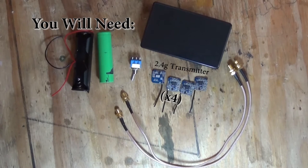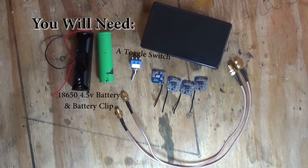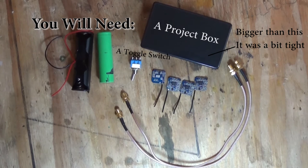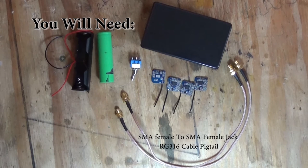A 2.4 gigahertz wireless transmitting module, an 18650 battery and battery clip, a toggle switch, an optional LED, a project case that will fit all of these items in, and a set of two female to female SMA jacks.